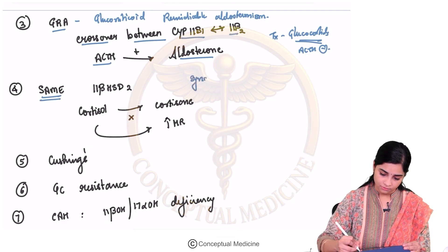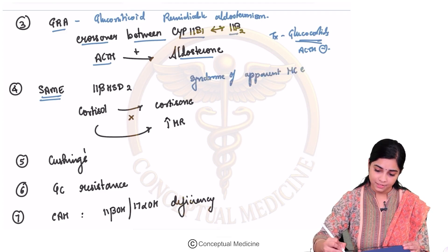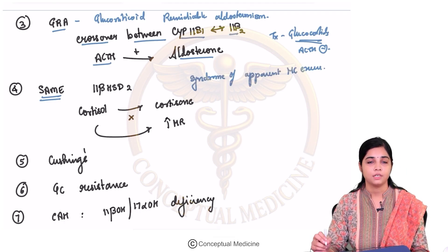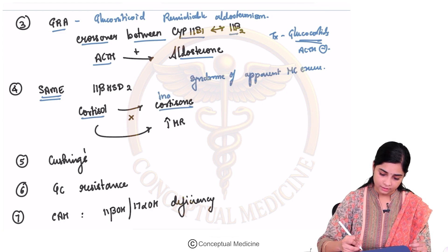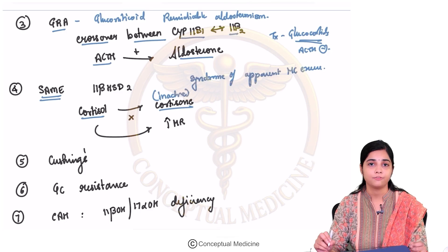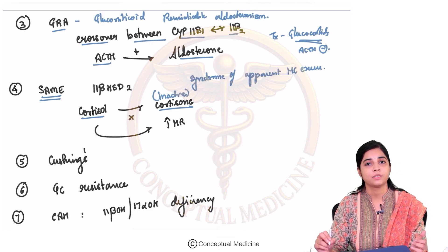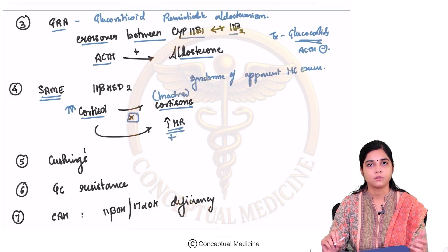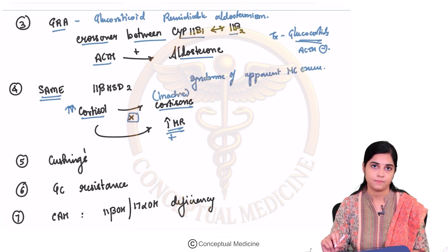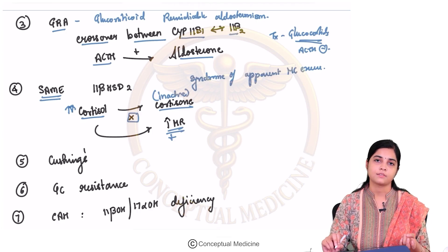Then SAME — syndrome of apparent mineralocorticoid excess. Normally, cortisol is converted into its inactive form, cortisone. In SAME, cortisol is not converted into cortisone, so cortisol levels remain high. Excess cortisol causes activation of the mineralocorticoid receptor, making it appear as if mineralocorticoid is in excess. That is why it is called syndrome of apparent mineralocorticoid excess.